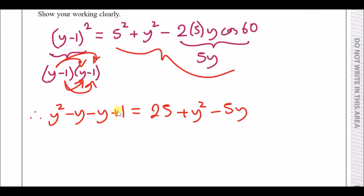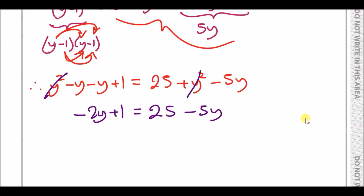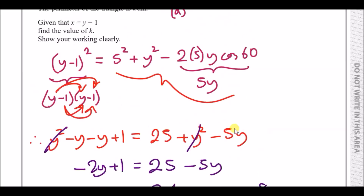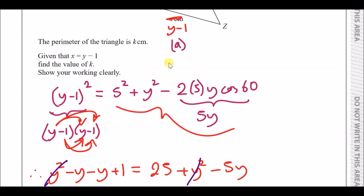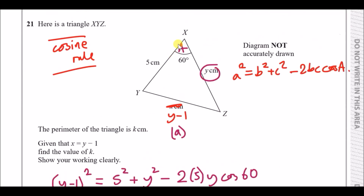We've got y squared on both sides of the equals sign so we can cancel them out. Collecting like terms: minus 2y plus one equals 25 minus 5y. Moving y's left and numbers right: 5y minus 2y gives 3y, and 25 minus 1 gives 24. Dividing by three: y equals eight. Then x equals eight minus one, which is seven.